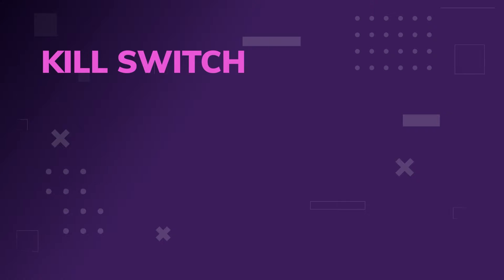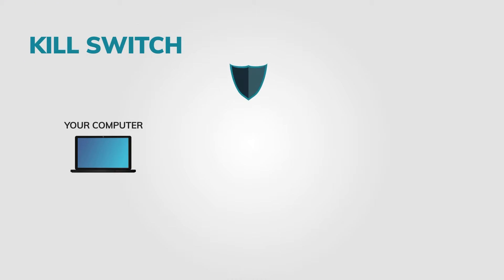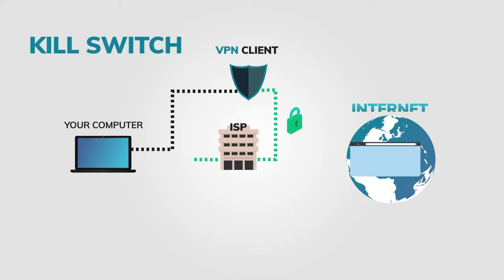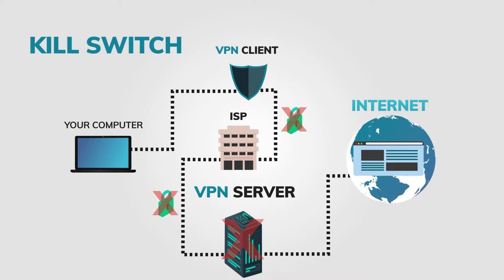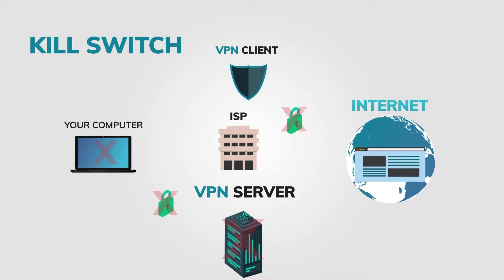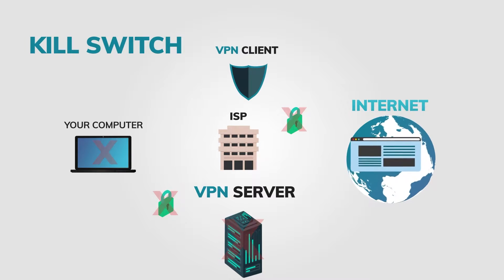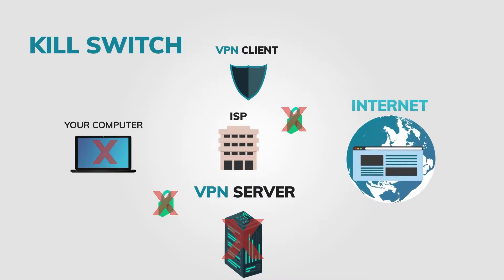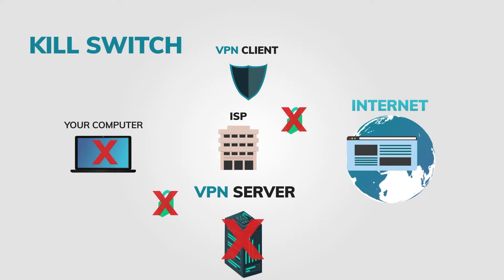Let's talk about kill switches. These just disconnect you from the internet if your VPN connection drops — that's it. This feature is fantastic for overall security, but very annoying for casual users. Most people will want to turn it off. If the VPN server stops working, then all your internet stops working. It's a very simple feature and very useful for people who definitely don't want to leak even a single byte of data, but it's terribly frustrating for regular users.